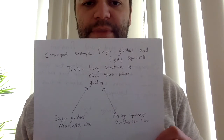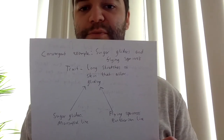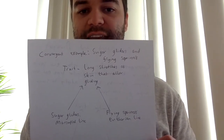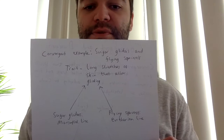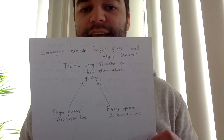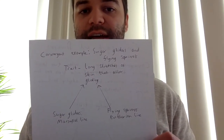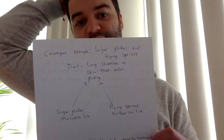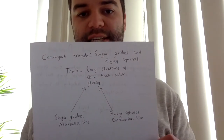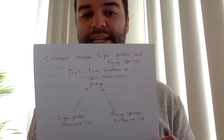A good example of that would be sugar gliders and flying squirrels. They are both small mammals that have long stretches of skin that allow them to glide between trees. Sugar gliders are marsupials and flying squirrels are eutherians, so they're different groups of mammals and don't have a recent common ancestor. They both evolved that trait over time, living in a dense rainforest and needing to glide between trees. That's convergent evolution — they've come from different recent ancestors but have still gained a similar trait.